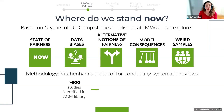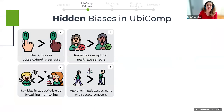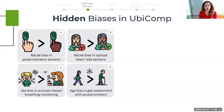Following the same protocol, we identified more than 600 articles in the ACM digital library, assessed 523 full texts for eligibility, and included 49 papers in our review. Based on our survey, we found multiple hidden biases in ubicomp data — such as racial biases in pulse oximeter and optical heart rate sensors, sex biases in acoustic-based breathing monitoring, and age biases in gait assessment with accelerometers, among others.